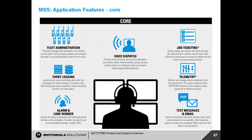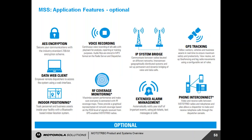When ordering a Motorola sold and supported application, there are two aspects. First, the core part of the application includes: fleet administration, event logging, alarm and lone worker, voice dispatch, job ticketing, and telemetry or text messaging — all available when you purchase the core licence. Beyond that, optional modules depend on what the customer wants: AES encryption, voice recording, GPS tracking, indoor location tracking, extended alarm management, IP system bridging, and telephone interconnect. These are all ordered optionally as required.